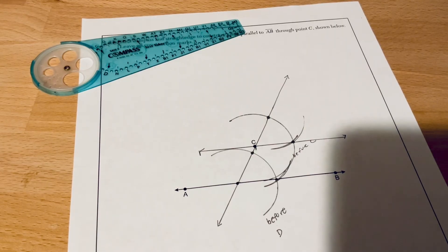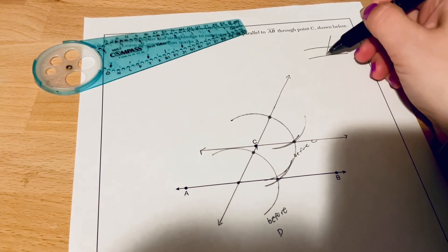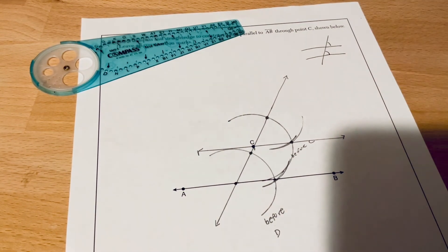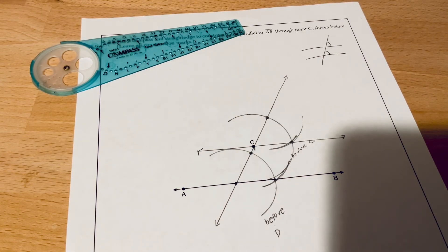And now you have your parallel line. Here's what we basically did. When you have two parallel lines and you have a transversal, the corresponding angles are congruent to one another. So what we basically did is we made two corresponding angles that are congruent. And that in turn made the lines parallel.